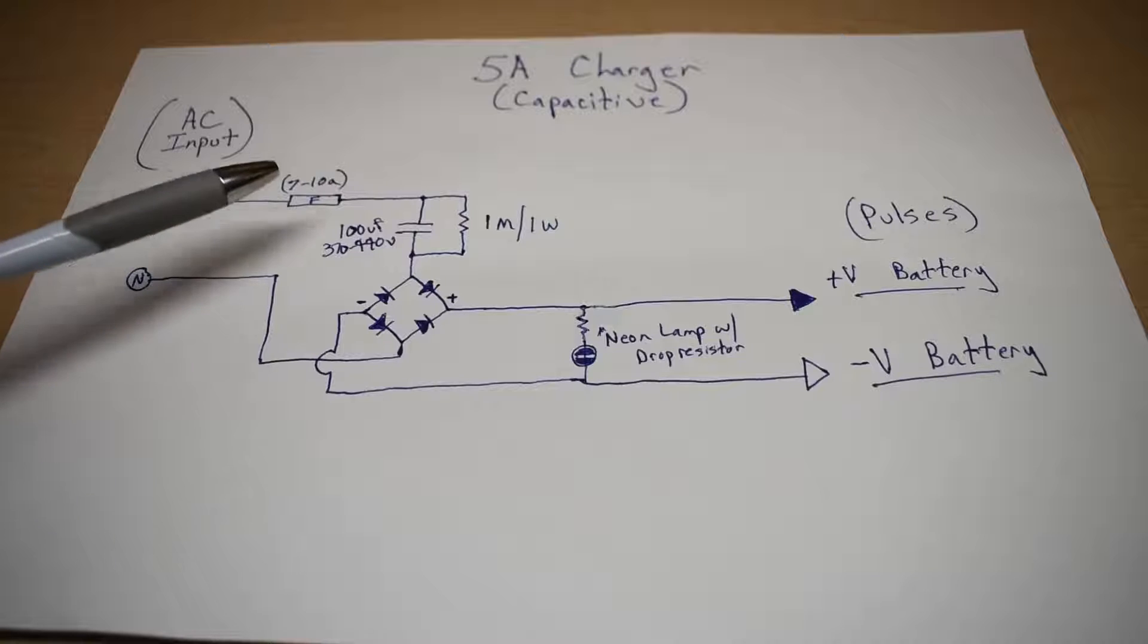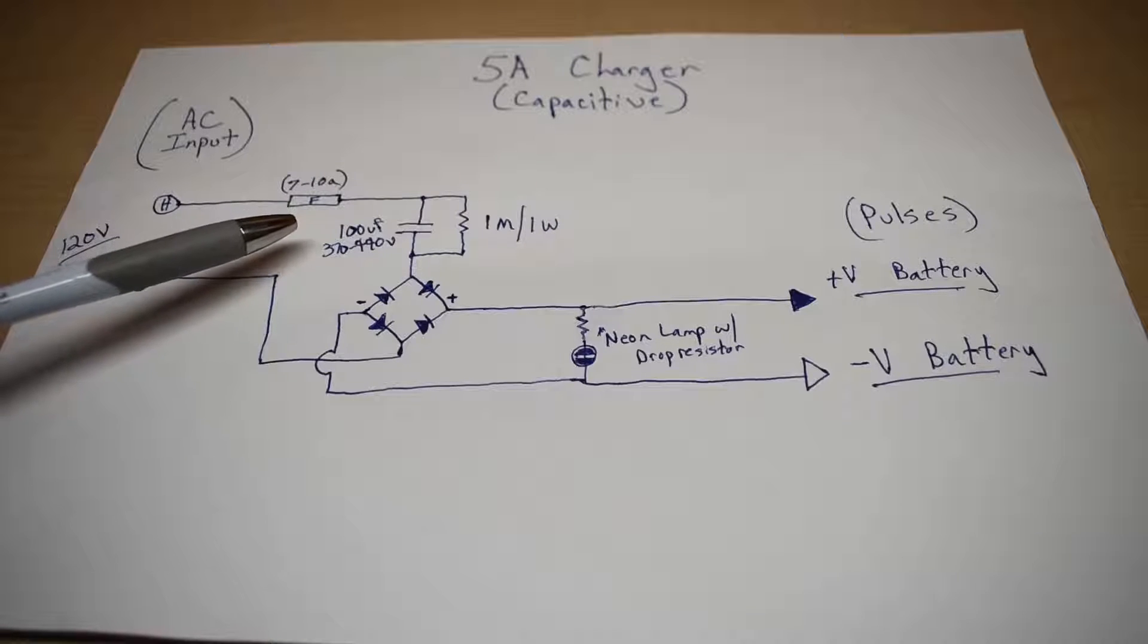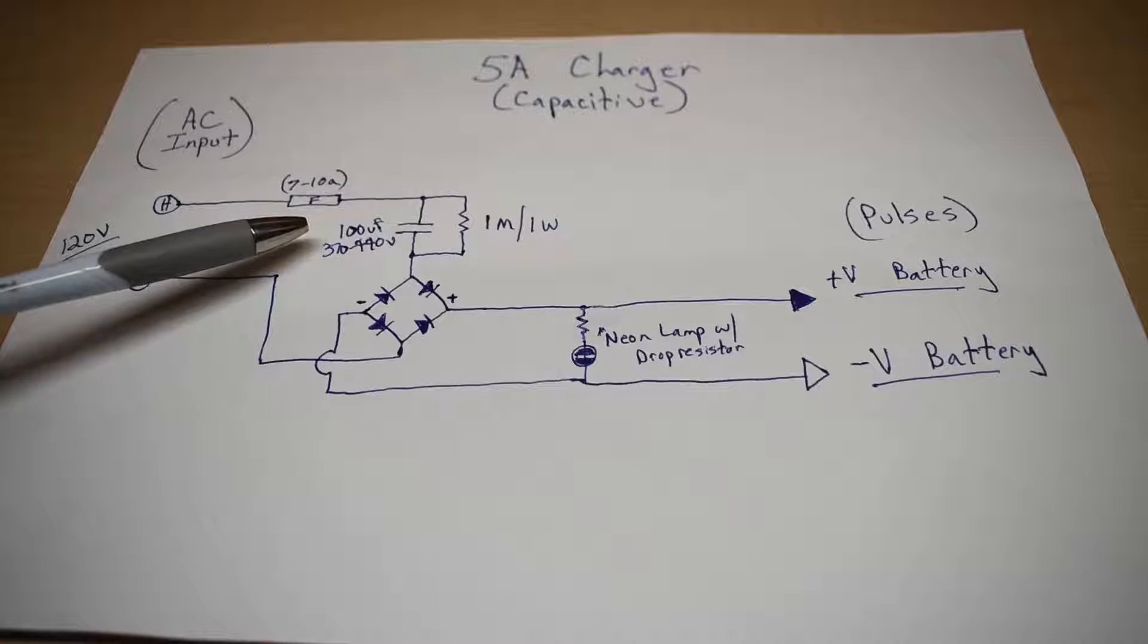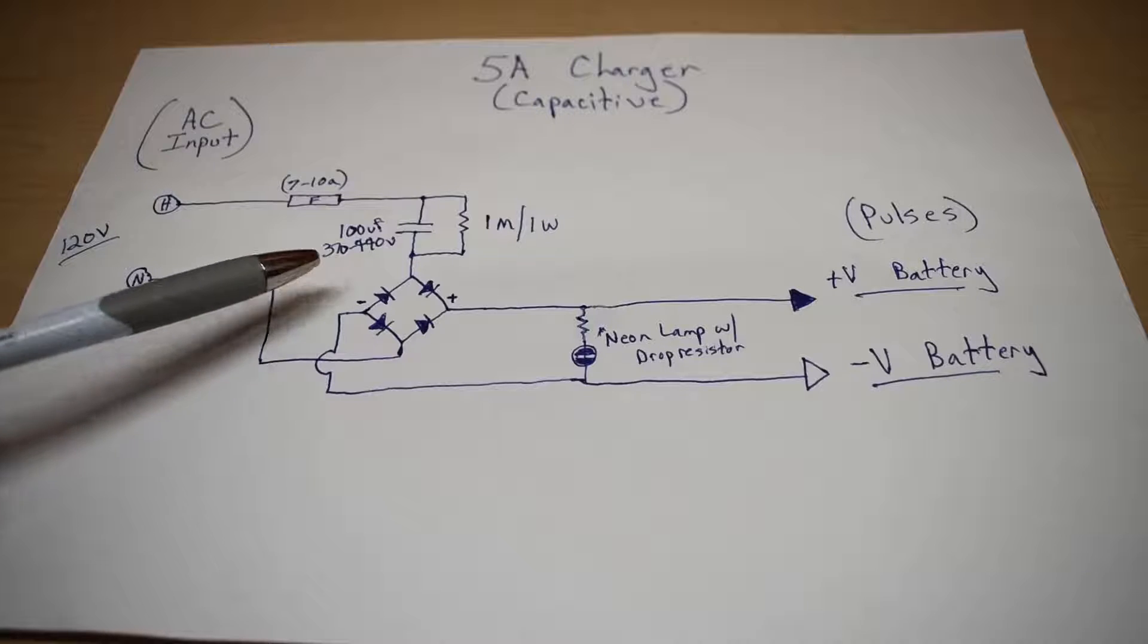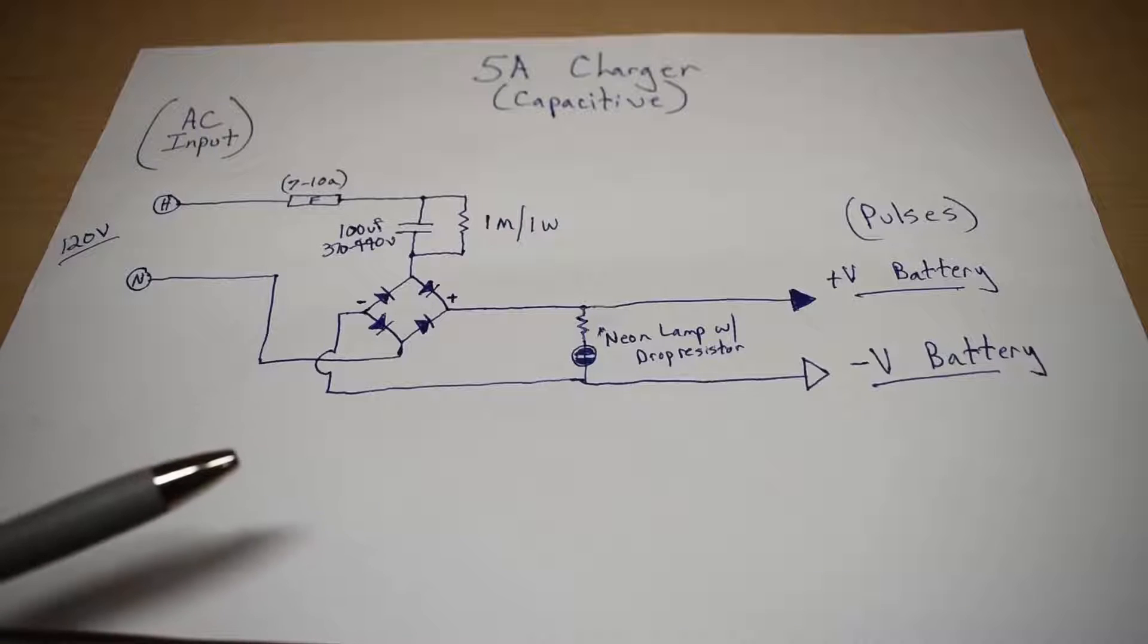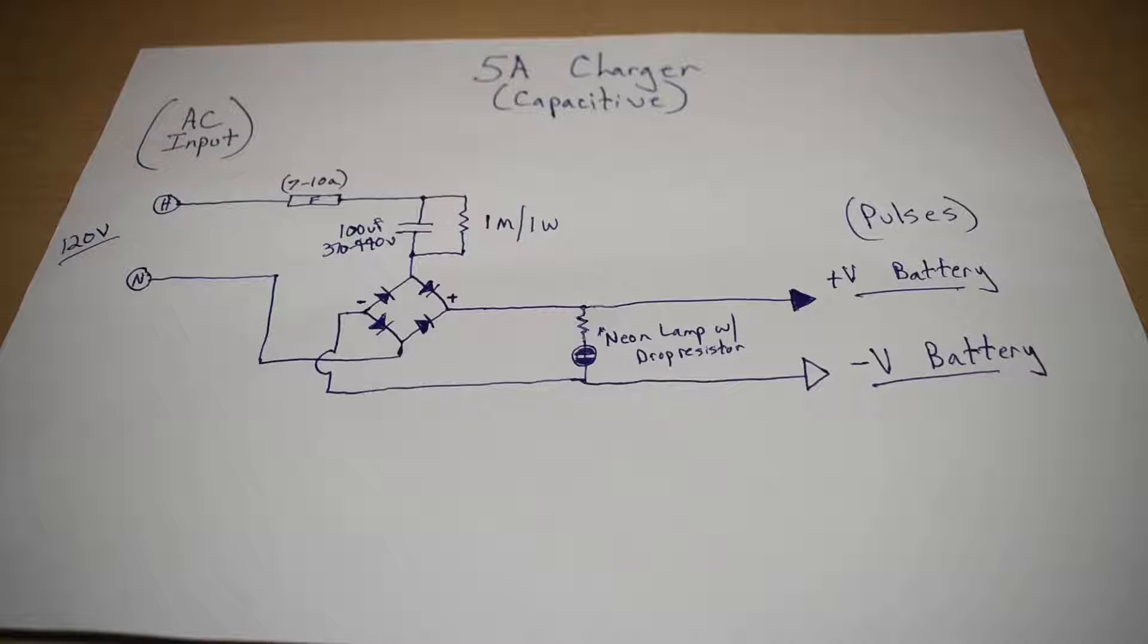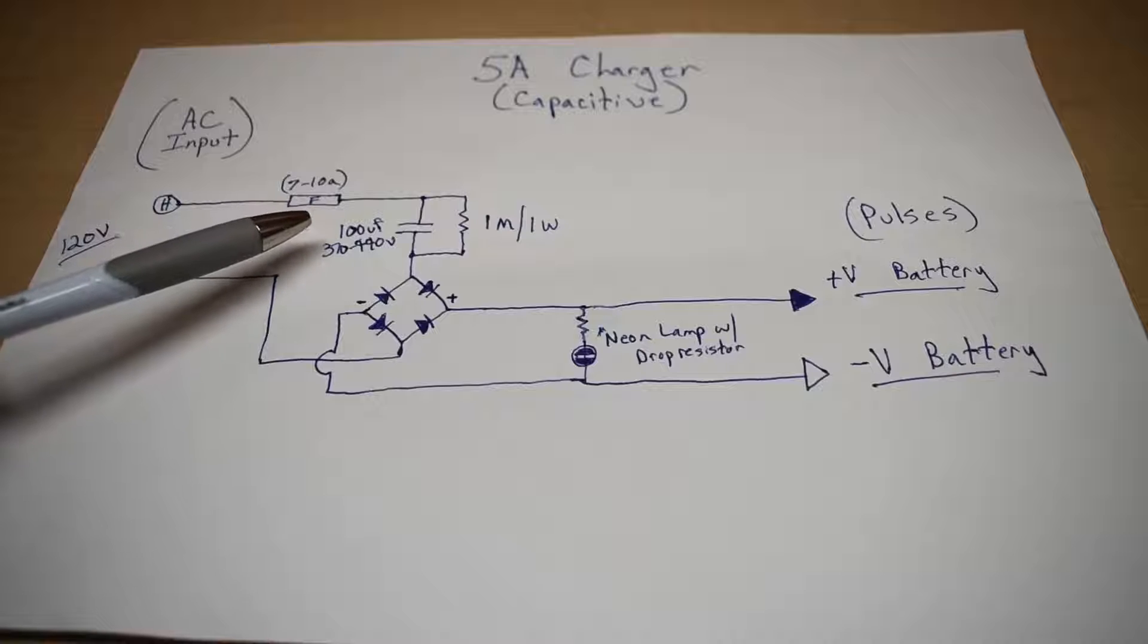The reason why we use an oil-filled run capacitor is because we want to be able to restrict the flow of current without generating heat like a resistor. So a 100 microfarad capacitor at 60 Hz has a resistance that would be equivalent to a 25 ohm resistor. These capacitors are usually in a 370 to 440 volt range, and you must use a run capacitor that is oil-filled. Do not use one of these capacitors here, it's a start capacitor. It will explode if continuous current is applied. The oil-filled capacitors are designed to be left in circuit.